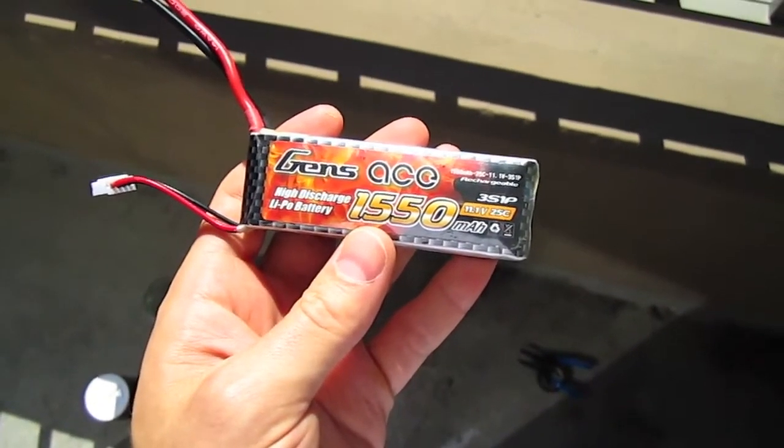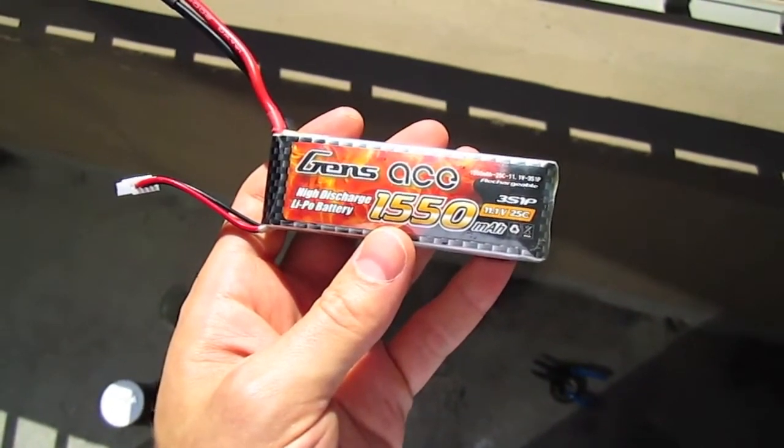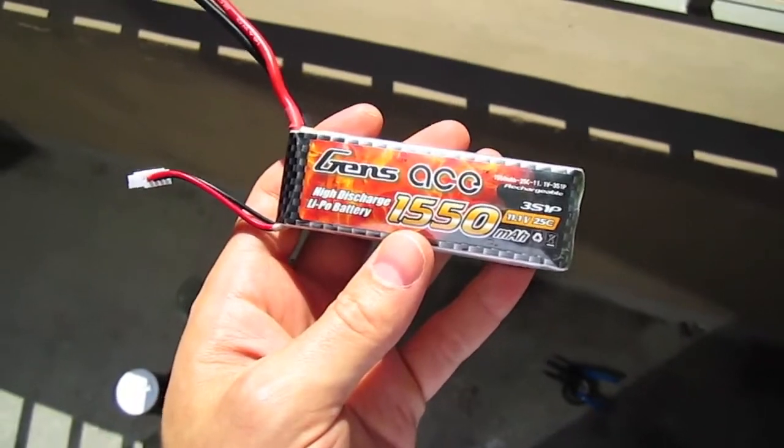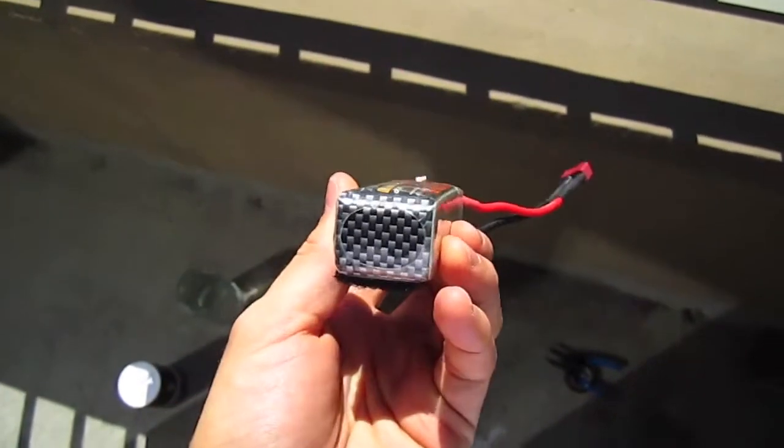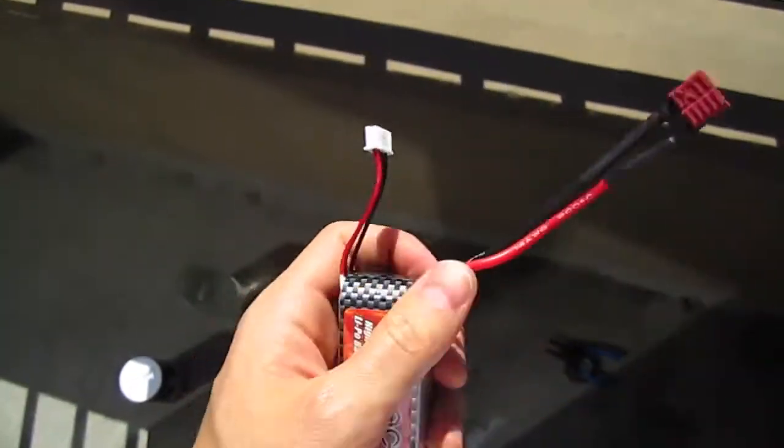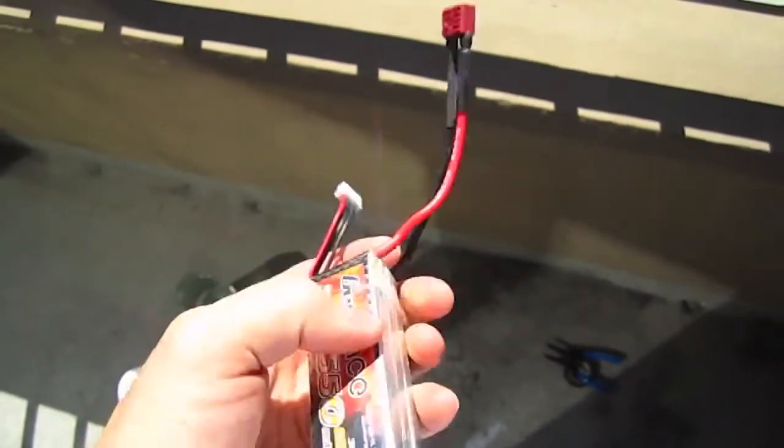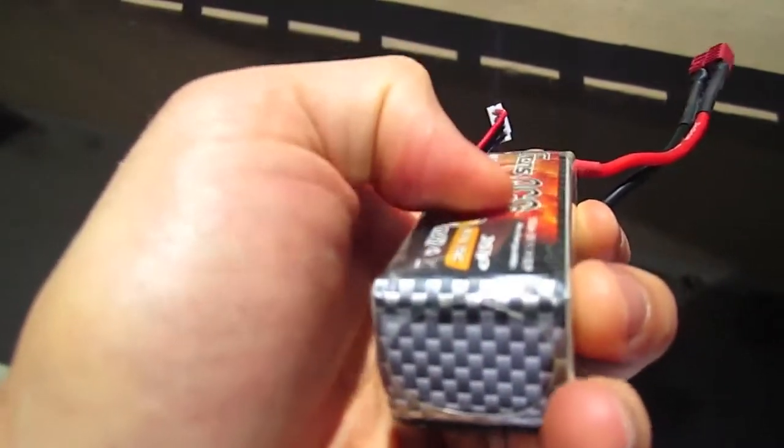All right, so last week when I was flying I got a plane caught in the tree. This was the battery on it and obviously this battery is plugged in and it was up in the tree for about a week plugged in. I just got it out and it's pretty puffy here.